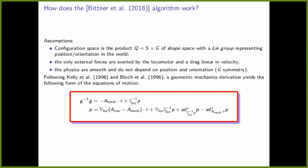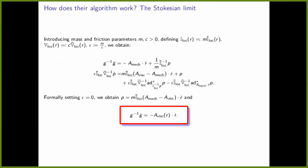In these equations: G represents the position and orientation of the robot or animal; R represents the shape, like all joint angles; P is something like momentum — the components of momentum corresponding to the group, so for G in SO(3), P would typically be angular momentum. If the robot or animal has very small mass, or if damping is very large compared to mass, you can introduce a small parameter epsilon — the ratio of mass to damping — and inserting it gives a singularly perturbed system.